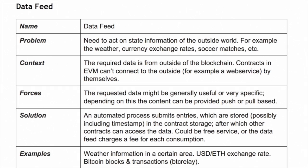If you have some kind of weather data — for example, if you have crop insurance and you want to see if there was rainfall or not in a certain location — all kinds of financial contracts could use exchange rates between the Ethereum price, the dollar price, and the Bitcoin price.